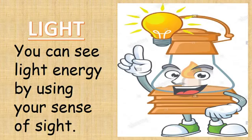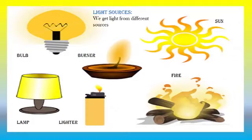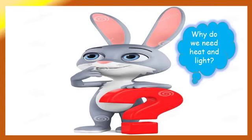Light — you can see light energy by using your sense of sight. Light sources. We get light from different sources, like bulb, burner, lamp, lighter, fire and sun.